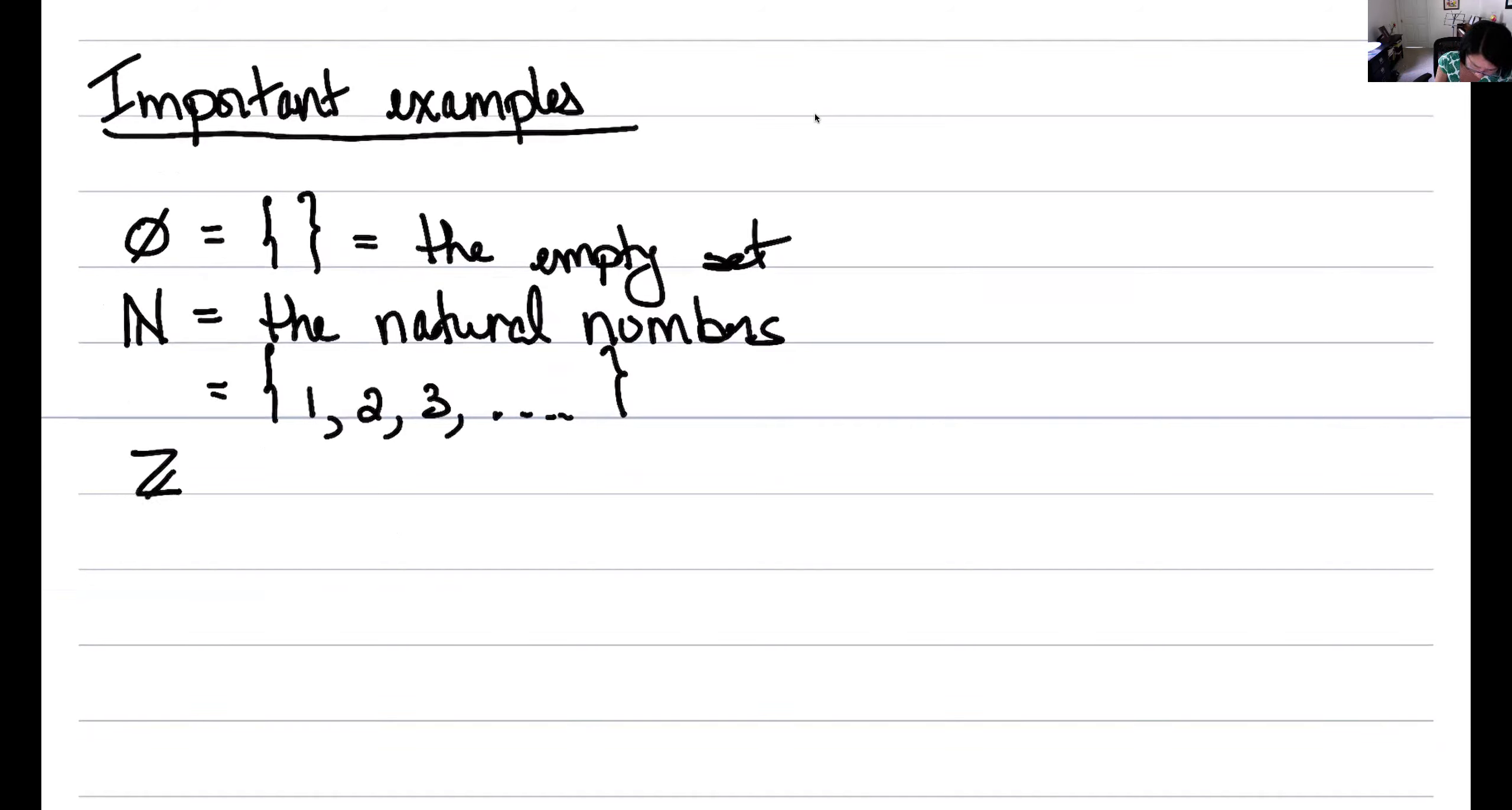Other important sets. There's the set of integers. So ℤ, the integers. And these, it's an infinite set. And it's all the counting numbers and their negatives and zero. So like, it goes on forever.